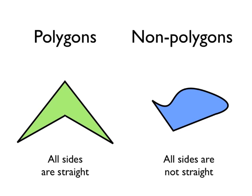If all the sides are not straight, so for example, you have at least one curved side on the shape, we call that a non-polygon.